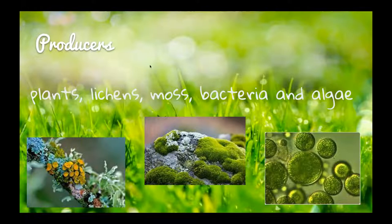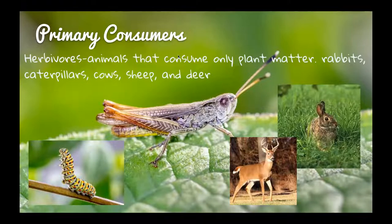As you may guess from the name, producers produce. And consumers consume — they eat. Primary consumers are the first consumers: these are the herbivores, the animals that consume only plant matter, like rabbits, caterpillars, cows, sheep, and deer. A lot of times if you think of primary consumers, you think of prey animals, but they can also be as large as cows and deer.